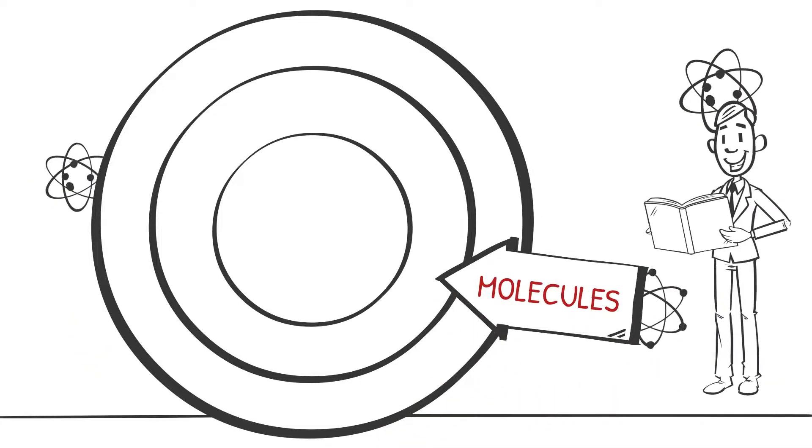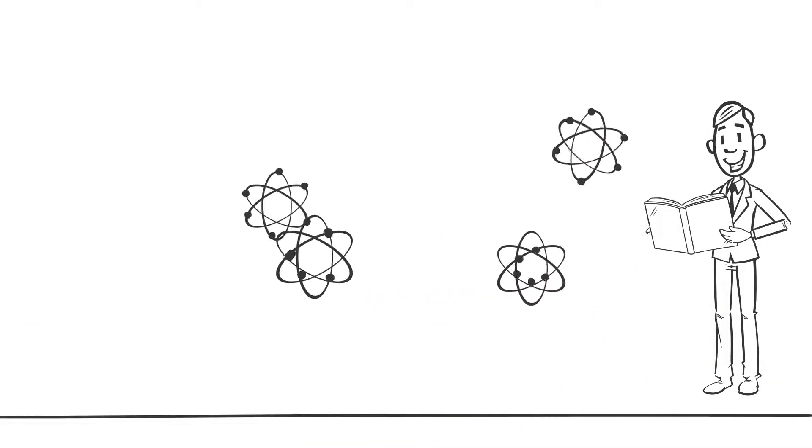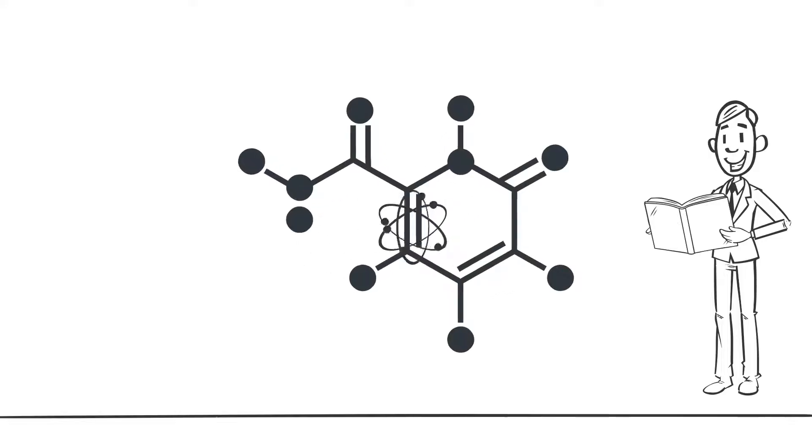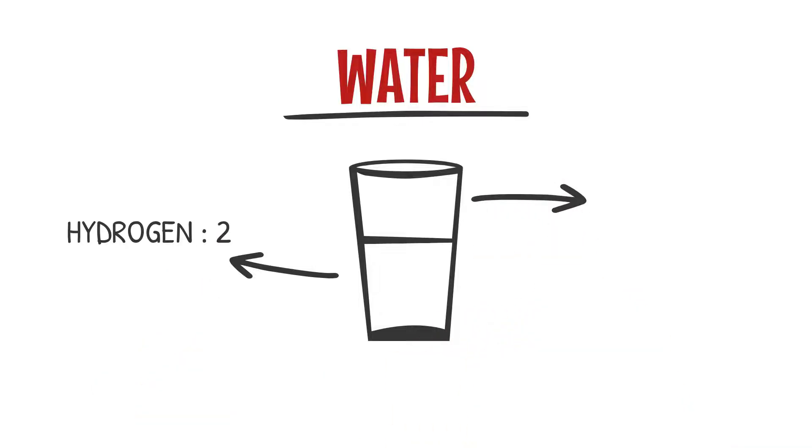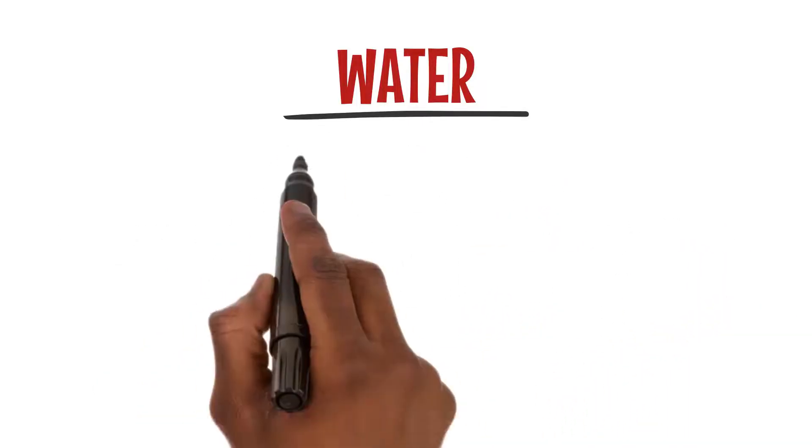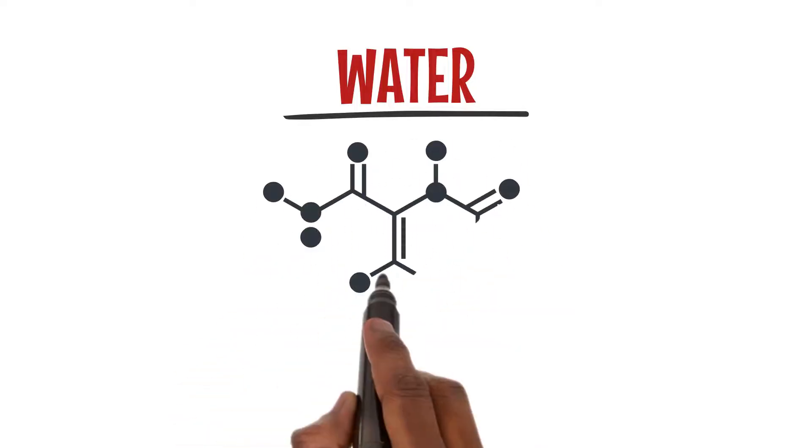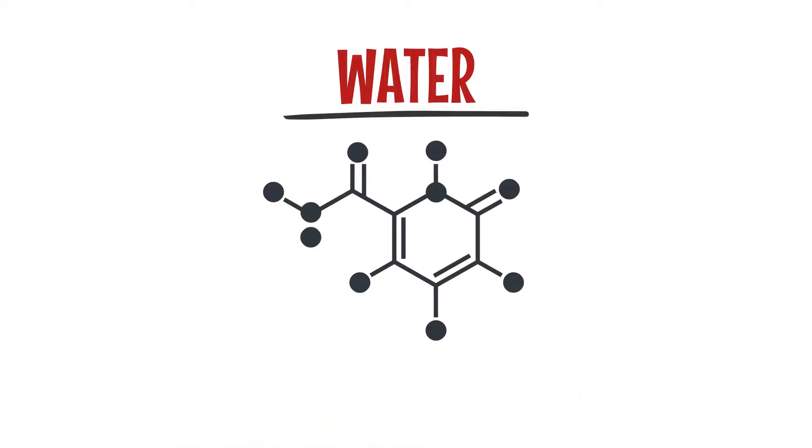Now let's zoom out a bit and talk about molecules. Molecules are formed when atoms join together. Take water, for example—it's made up of two hydrogen atoms and one oxygen atom. When they bond together, they form a water molecule.